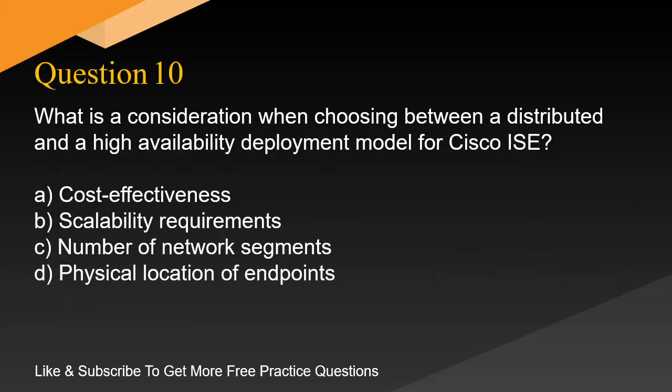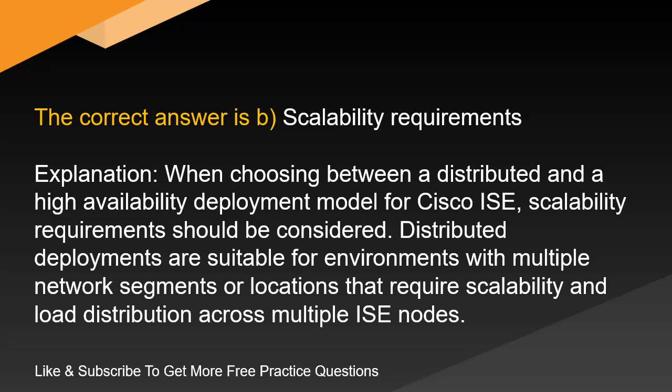Question 10. What is a consideration when choosing between a distributed and a high availability deployment model for Cisco ISE? A. Cost effectiveness. B. Scalability requirements. C. Number of network segments. D. Physical location of endpoints. The correct answer is B. Scalability requirements.